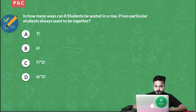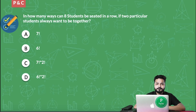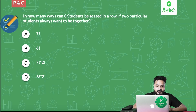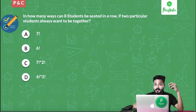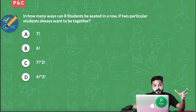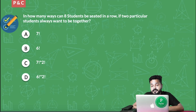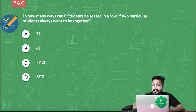Here's a very basic question: in how many ways can 8 students be seated in a row if two particular students always want to be together? This falls into the first category of questions wherein two particular things or people always want to be together and you have to find the permutations related to that. I'll give you 45 seconds for this particular question — your timer starts now.